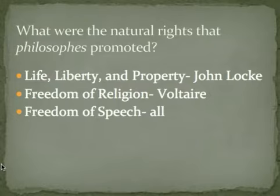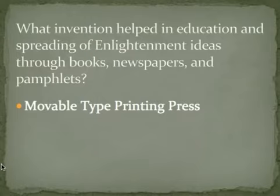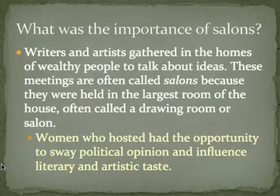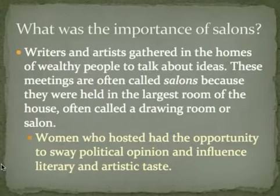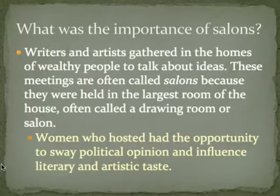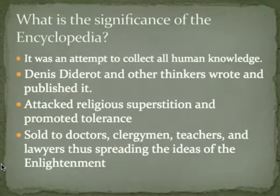The natural rights promoted by philosophes included John Locke's life, liberty, and property — which the United States changed to life, liberty, and the pursuit of happiness — along with freedom of religion, championed by Voltaire, and freedom of speech. The movable type printing press (Gutenberg) helped spread Enlightenment ideas through books, pamphlets, and newspapers. Salons were gatherings where writers, artists, and educated wealthy people met to discuss the latest writing, art, publications, and ideas — women who hosted these parties could sway political opinion by choosing the right books, guests, and art.